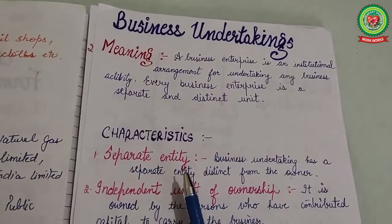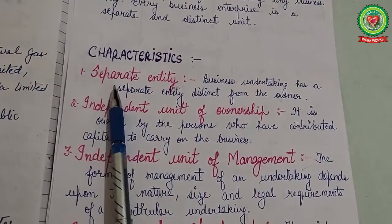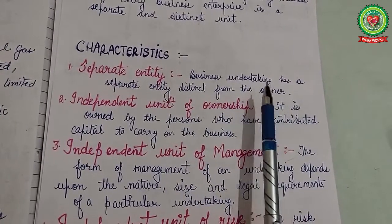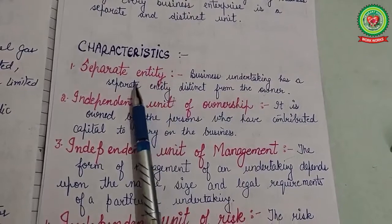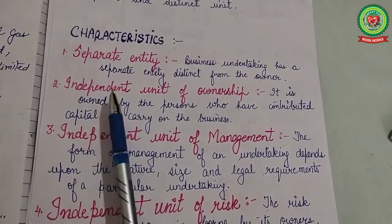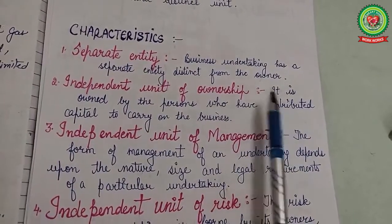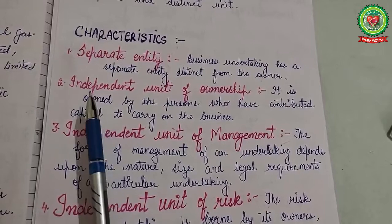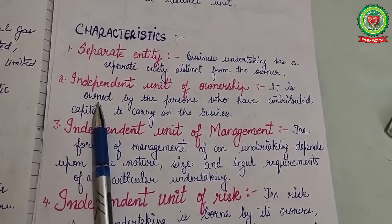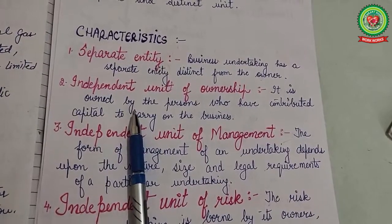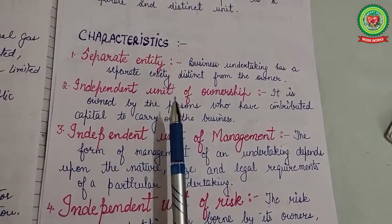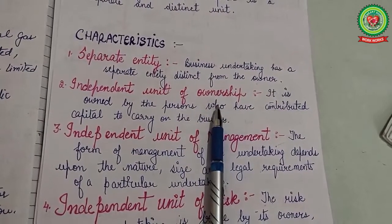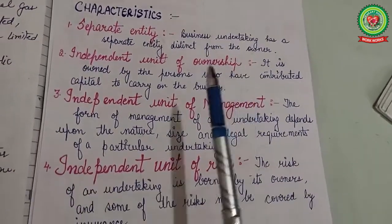Now we will discuss the characteristics of business undertakings. The first characteristic is separate entity — a business undertaking has a separate entity from its owner, generally known by its own distinct name. Next is independent unit of ownership — it is owned by persons who have contributed capital to carry on the business. Owners may be private individuals or the government. If capital is contributed by private individuals, it is called a private sector undertaking; if contributed by the government, it is called a public sector undertaking.